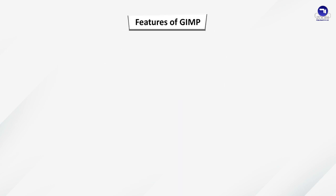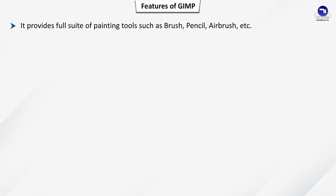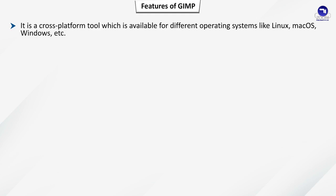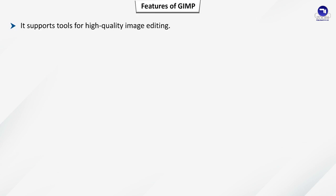Features of GIMP: It provides a full suite of painting tools such as brush, pencil, airbrush, etc. It is a cross-platform tool available for different operating systems like Linux, Mac OS, Windows, etc. It supports tools for high quality image editing and can be used for image retouching, image restoring, and image composing.